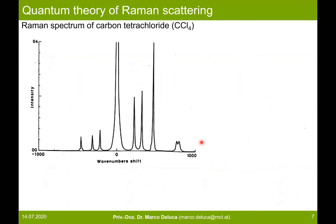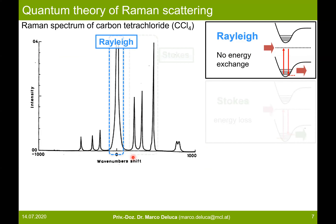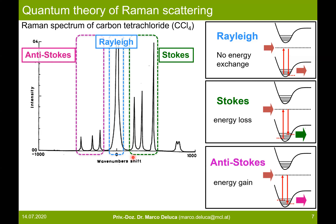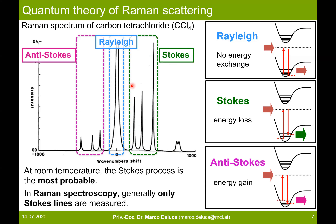A Raman spectrum looks like this: we see very different peaks. If we represent the spectrum in terms of wavenumber shift from the incident radiation, we see a very strong radiation at zero position — the Rayleigh light, the elastically scattered light. Mirrored from it, we see the Stokes lines and the anti-Stokes lines at the same position, but one represents energy loss and the other energy gain. The Stokes lines are the most intense because at room temperature the Stokes process, which originates at the ground state, is most probable, and so in Raman spectroscopy generally only the Stokes lines are measured.